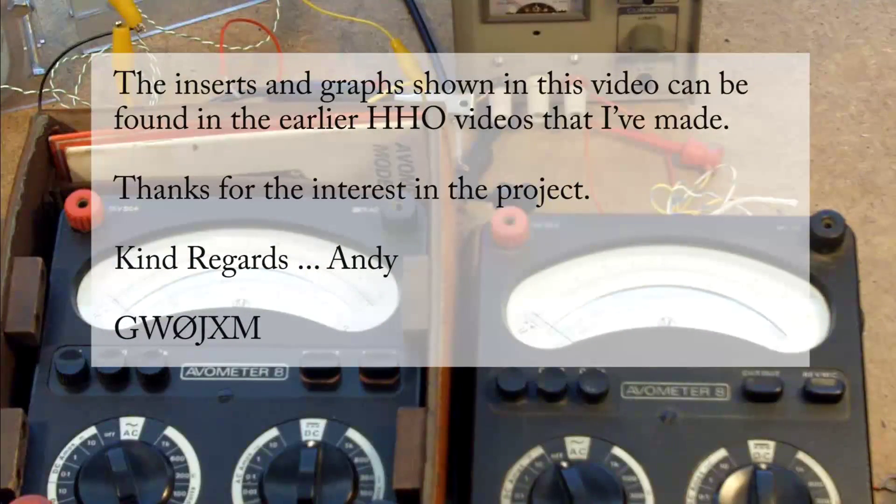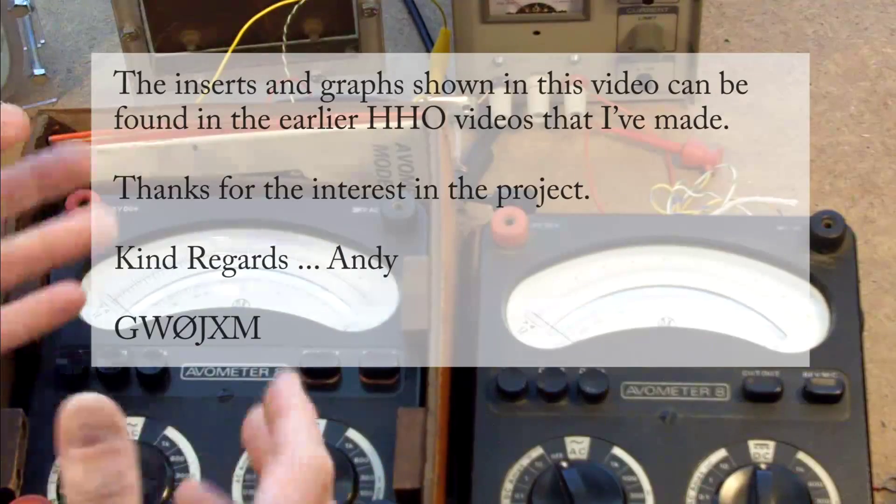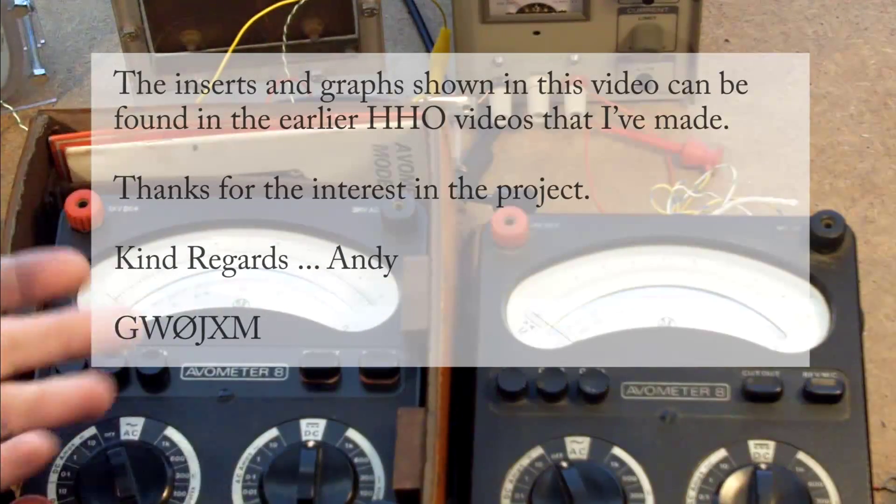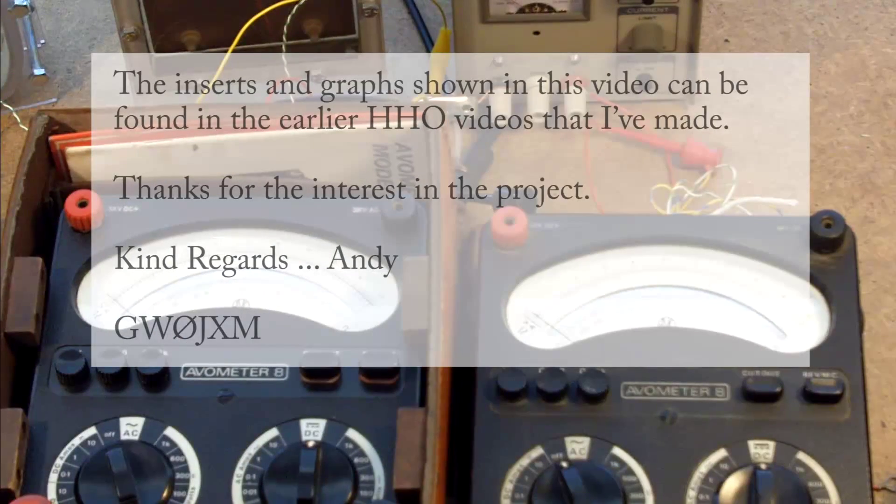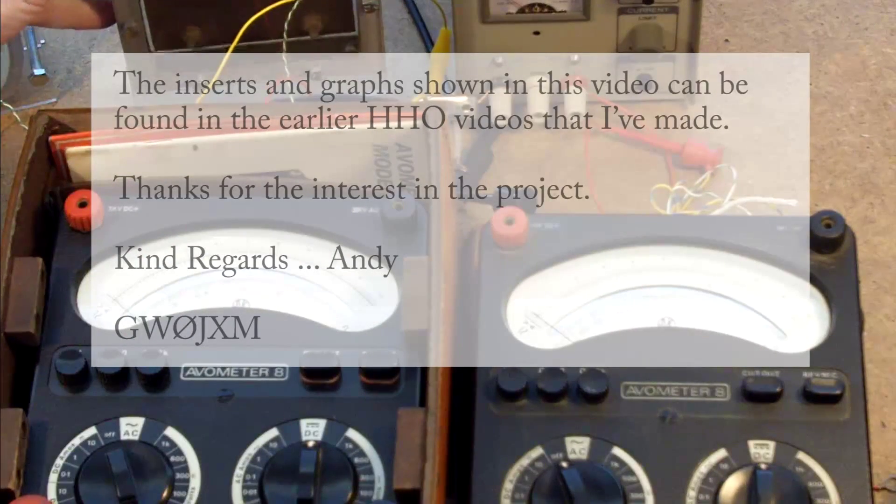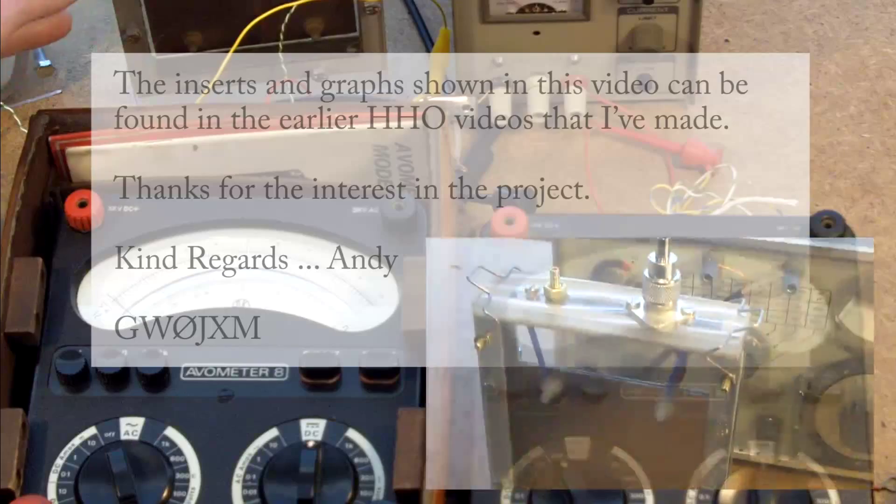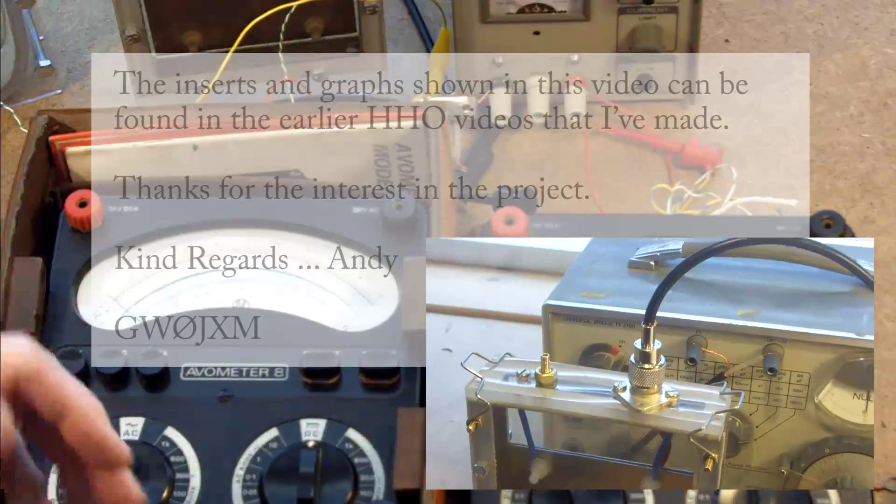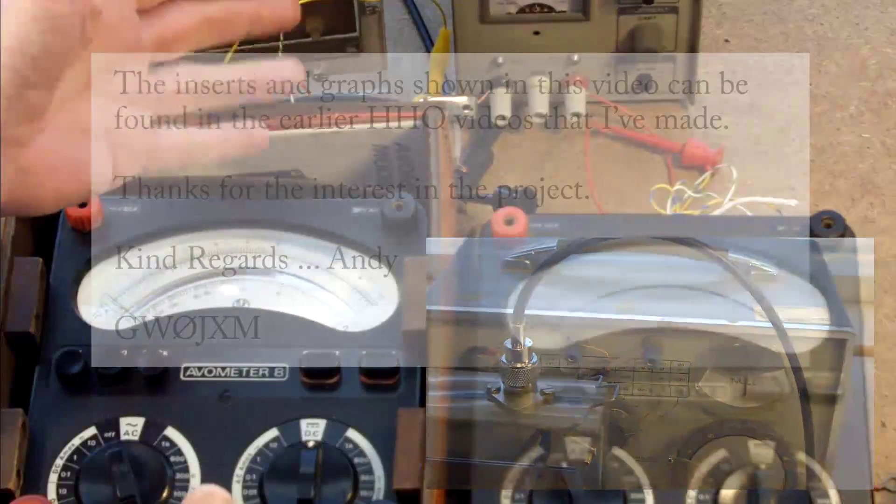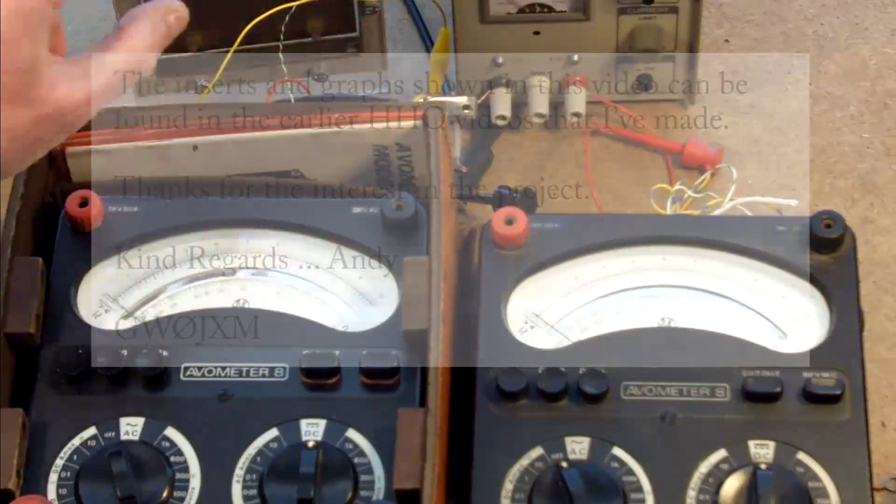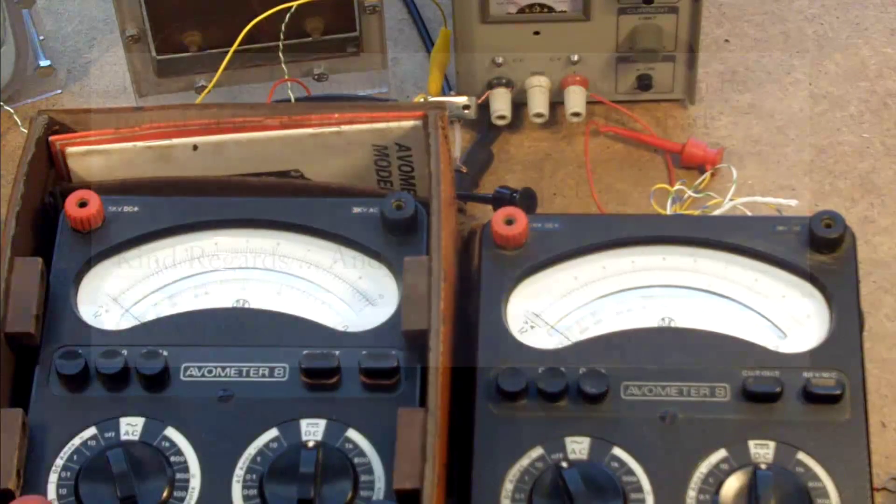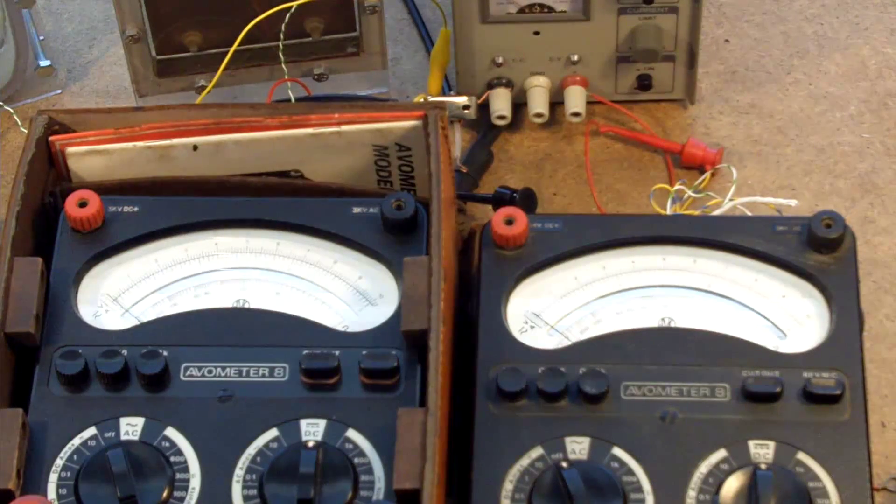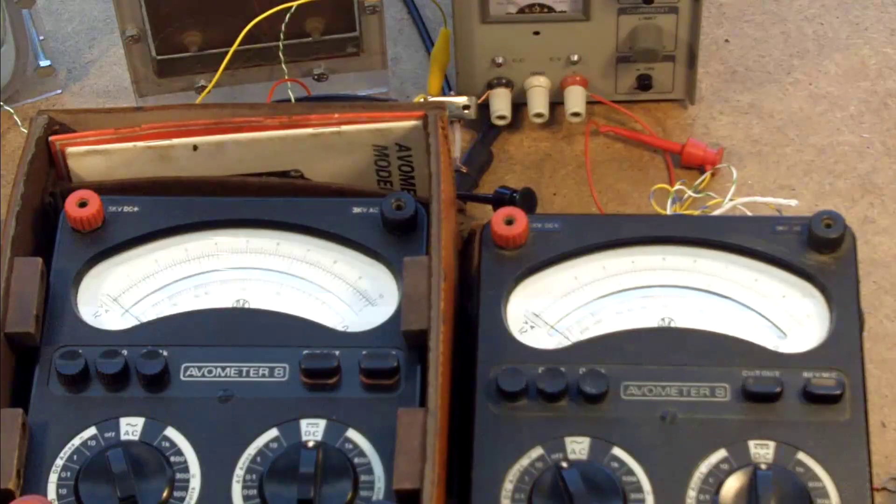so I think I can say the cell behaves more like a battery than a capacitor. Obviously it's got capacitance. But in order to establish what that capacitance is, I can't use my capacitance bridge because the battery-like effect from the cell confuses the bridge. So anyway, I hope you found that interesting, guys. Thanks for watching. Bye-bye.